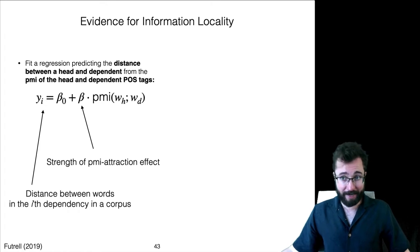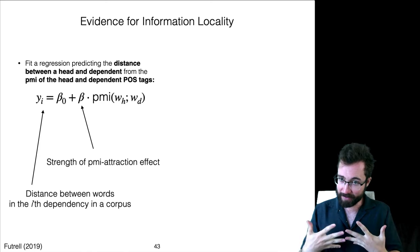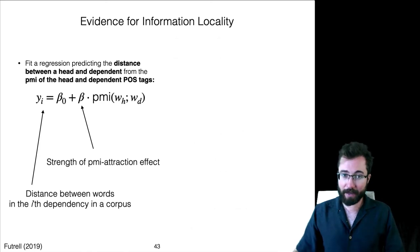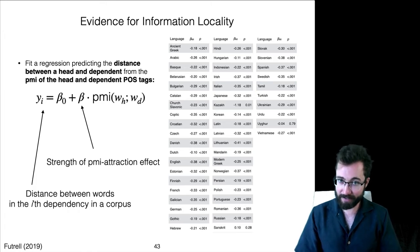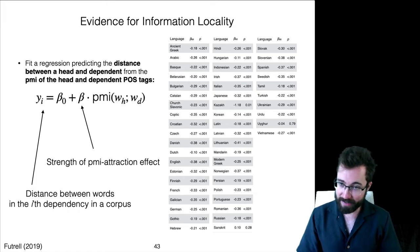Now, if this coefficient beta comes out negative in the regression, that means that words with high PMI are attracted to each other. And running this regression now across many languages from universal dependencies tree banks, we find indeed a negative coefficient with roughly the same effect size across the different languages.